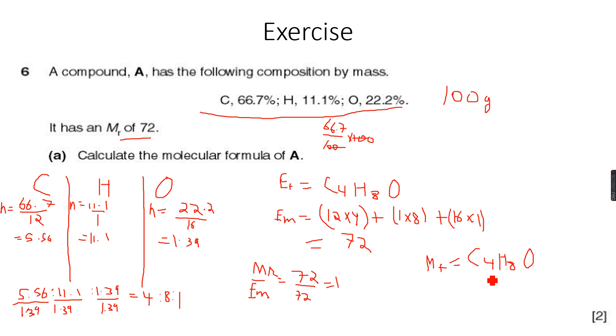But if this ratio was 2, then we would multiply all these numbers by 2. So the molecular formula would be C8H16O2. This would be the molecular formula if this ratio was 2.